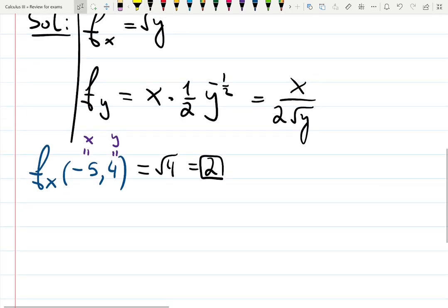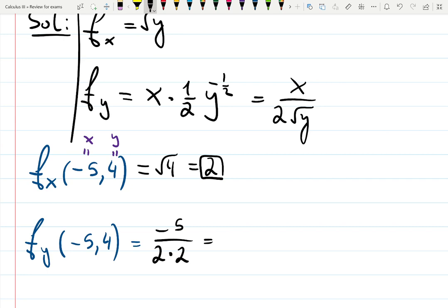And then in blue color, the partial derivative with respect to y at (-5, 4) gives you x is -5, and then square root of 4 is 2. So it's going to be -5 over 4.